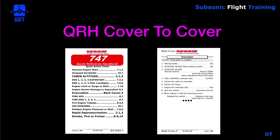In addition to a paper QRH, most pilots will also have the QRH on their iPad, which is another method of accessing a non-normal procedure. But normally in the 747-400, the primary method is to physically pick up the paper copy of the QRH, go to the index, find the non-normal you're looking for, and then go to the respective numbered tab section and find that procedure.